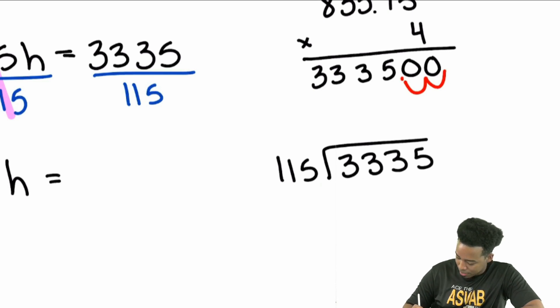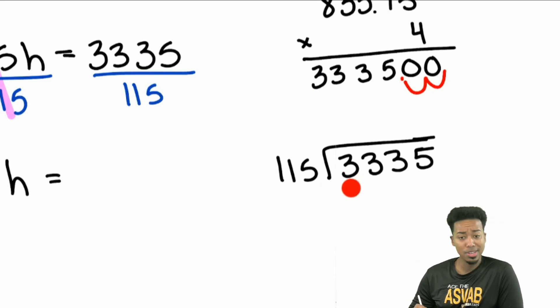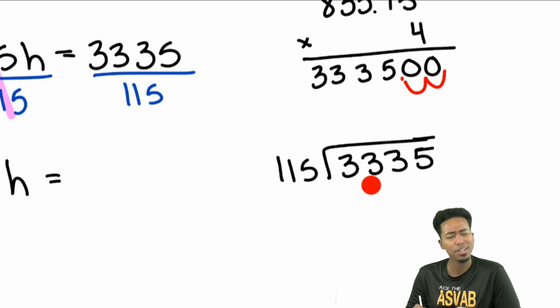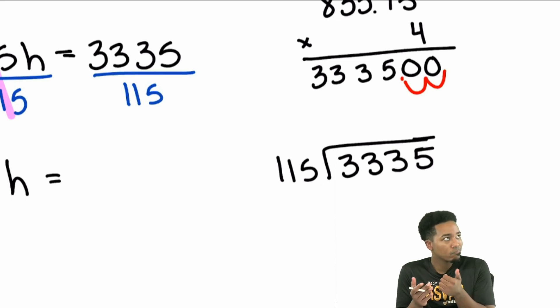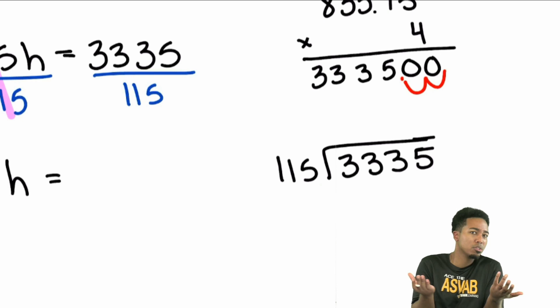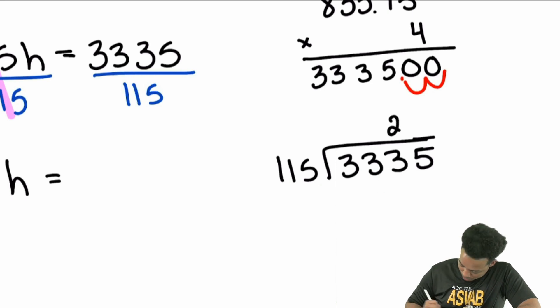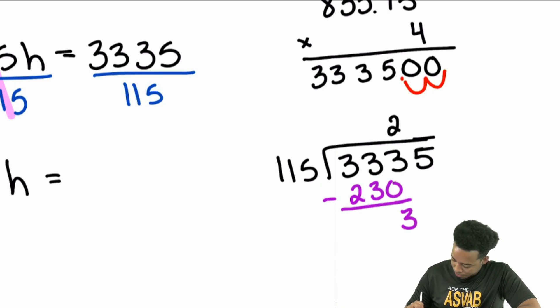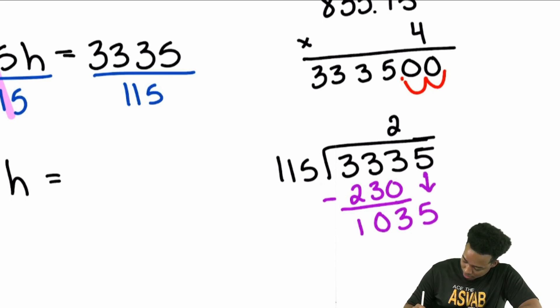Let's go ahead and cross multiply here. H multiplied by 115, that'll just be 115H. And then over here we have 833.75 times four. Obviously I'm not going to try to do that in my head. We're going to want to go ahead and write that out. So let's try that out here. 833.75 times four, multiplied by four right there. Five times four, that's going to give us 20. Seven times four, that'll give us 28. Carry the two, that'll be 30. Three times four is 12, carry the three is 15. Three times four is 12, carry the one is 13. Eight times four is 32, carry the one is 33.